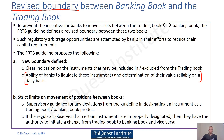There will be new strict limits on movement of positions between the two books, with supervisory guidance for any deviations from the FRTB guideline in designating an instrument as either a trading book or banking book product. Supervisory oversight will increase so that the banking supervisor has a clear view on any such deviations that may occur.